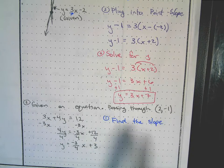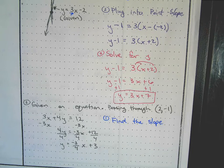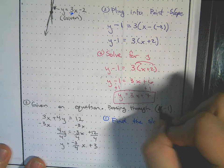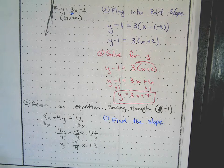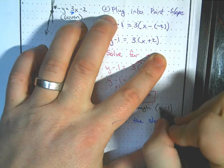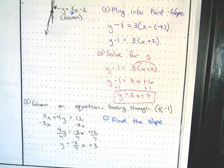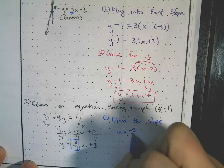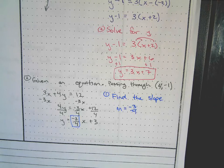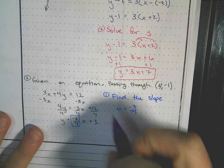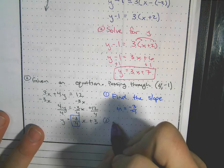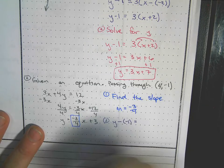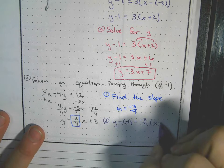Then divide everything by 4. We had to solve for y to find our slope, and we're going to write the equation of a line parallel to this one passing through the point (4, negative 1). Now we have the slope: m equals negative 3 fourths. Step 2 — plug into point-slope: y minus negative 1 equals negative 3 fourths times (x minus 4).